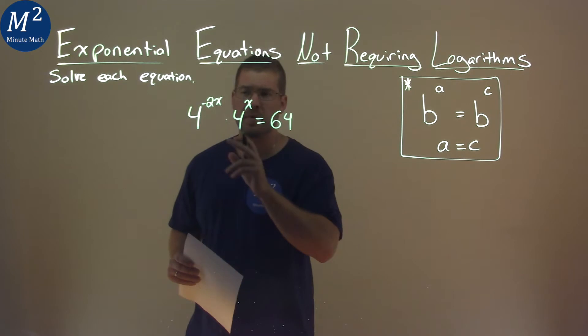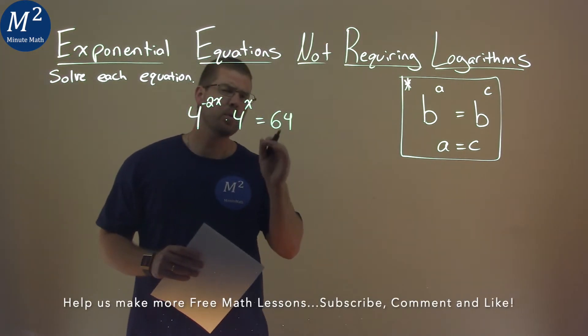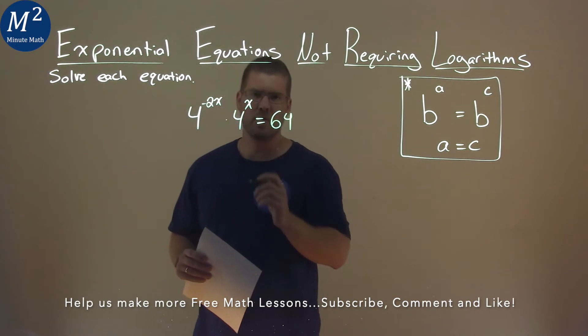We're given this problem right here, 4 to the negative 2x power times 4 to the x power equals 64, and we want to solve this equation.